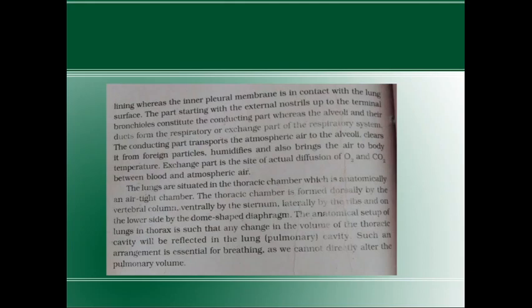So the thoracic chamber is bounded dorsally by vertebral column, ventrally by sternum, laterally by ribs, and on the lower side by the dome-shaped diaphragm. Diaphragm is a dome-shaped structure that separates the thorax and abdomen.